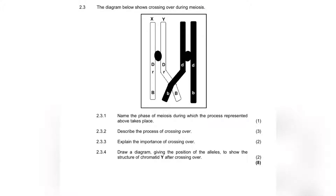For 2.3.2, we need to describe the process of crossing over. Even if you forgot to study it, you can look at the diagram. First, write that the homologous chromosomes — not just 'chromosomes,' specifically homologous chromosomes — lie next to each other. The chromatids then touch at a point called the chiasmata. That is another key word: chiasmata. It is at that point where genetic information is exchanged. That is essentially what crossing over is.